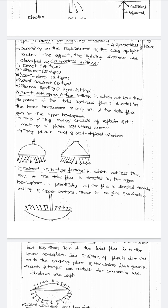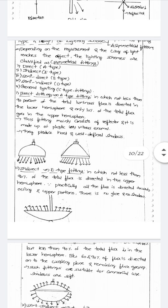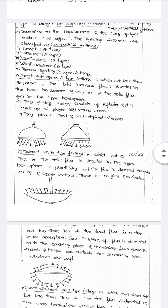Only 10 percent of the total flux goes into the upper hemisphere. This type of fitting mainly consists of a reflector, which is made up of plastic. It gives 90 percent of luminous flux in the direct hemisphere. Examples of use include restaurants.